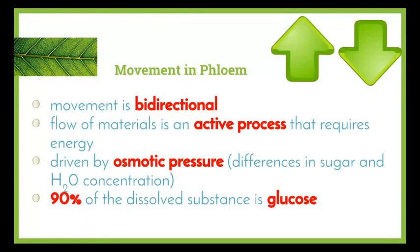Movement in the phloem is bidirectional, which means it can go up or down. The flow of materials is an active process, so unlike xylem it requires energy. The majority of the process is driven by osmotic pressure, brought about by the difference in sugar and water concentration. Ninety percent of the dissolved substance carried in the phloem is actually glucose, which is one of the main products of photosynthesis.